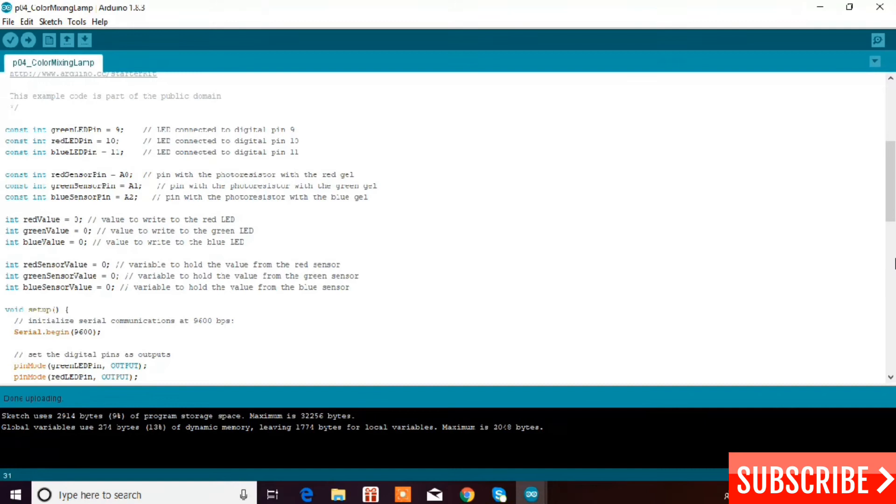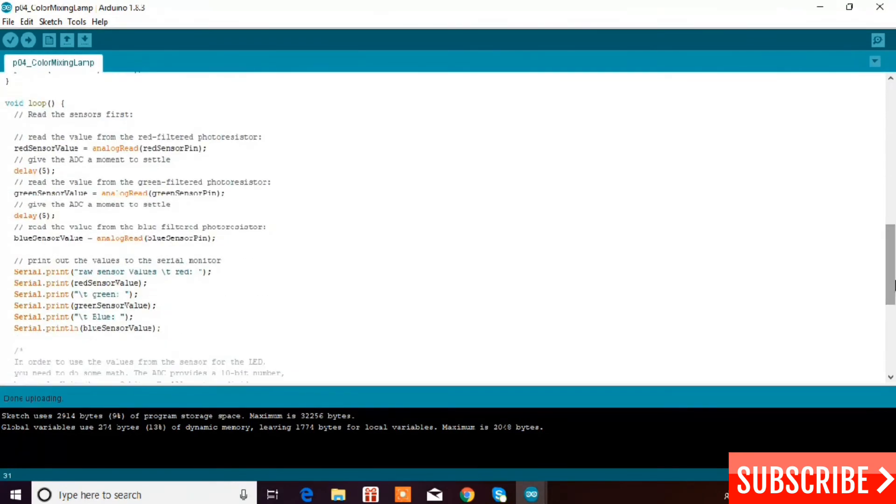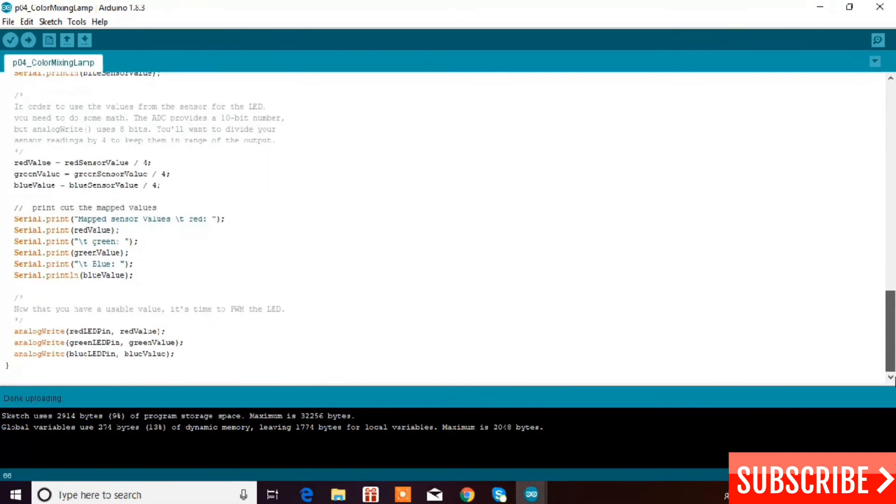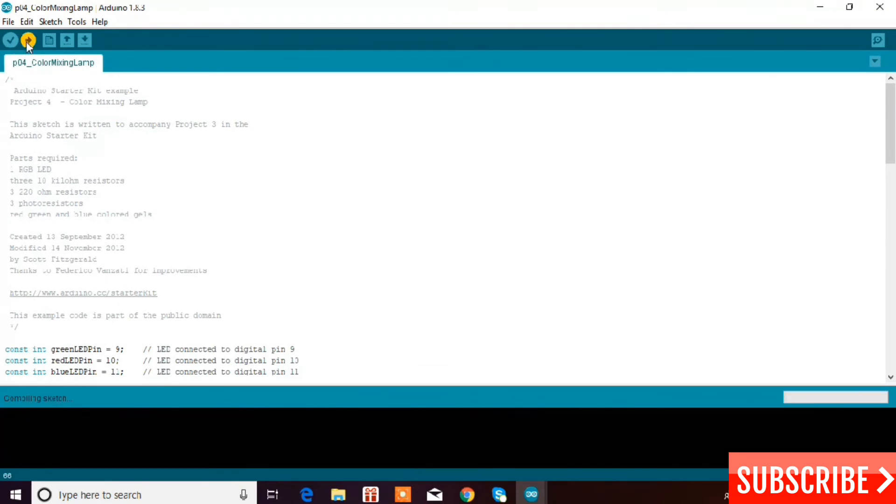We have three gels - red gel, green gel, and blue gel. This is how we end the code with this attribute. To upload the code, we have to press this button and verify the code. Now I'm going to upload it - compiling the sketch, uploading, and then issue uploading. It's really easy to upload.